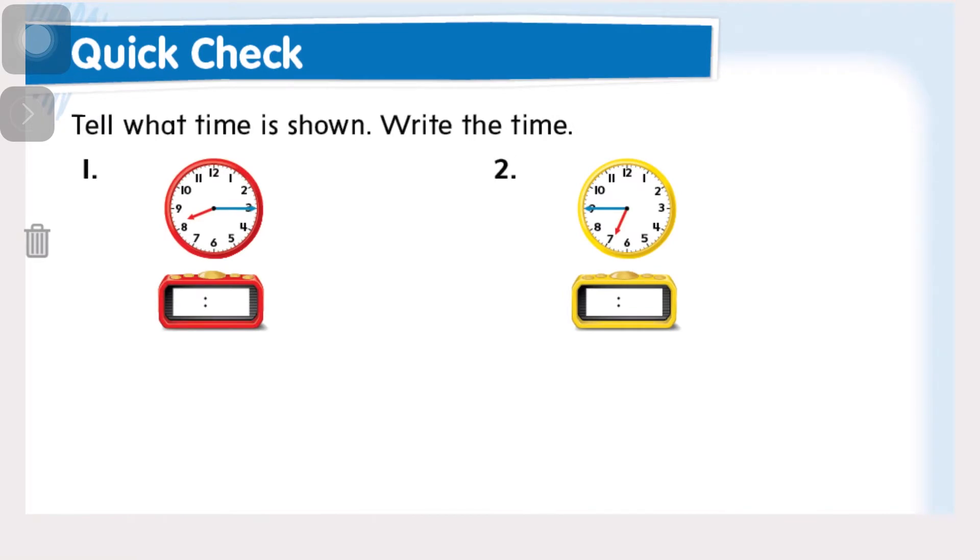Tell what time is shown, write the time. Our hour hand is just past the eight. Our minute hand is on the three, which is quarter past eight. If we count by fives, 5, 10, 15, we get 8:15 or quarter past eight. On this one we have the hour hand between the six and the seven. It's very close to the seven because it is almost seven o'clock, but it's not quite, so we can't say seven yet. We've got to say six. And then if we count by fives: 5, 10, 15, 20, 25, 30, 35, 40, 45.